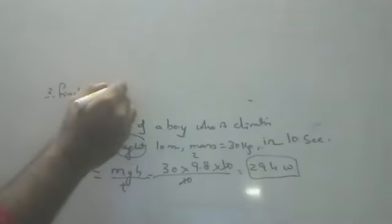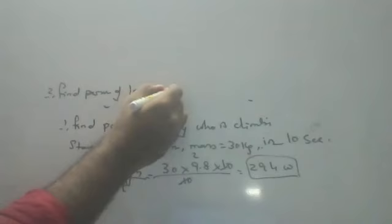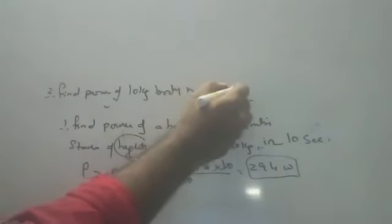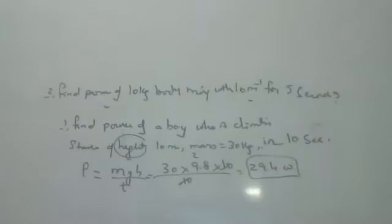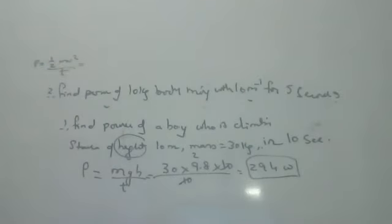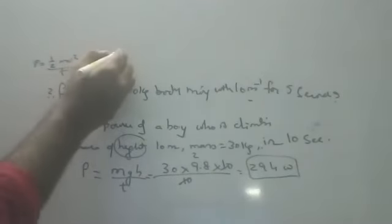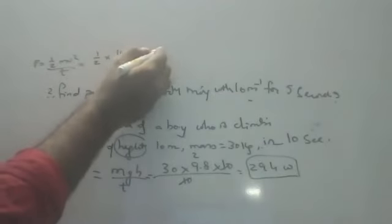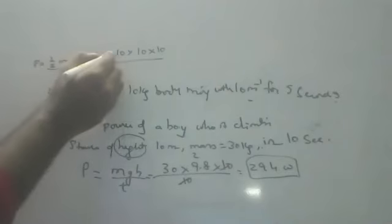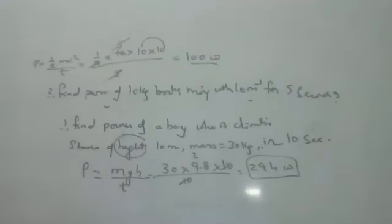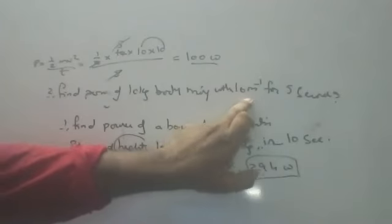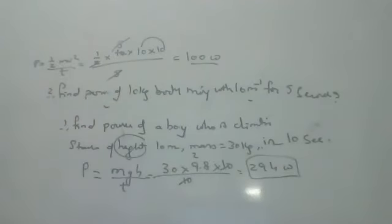Second sum: Find the power of a 10 kg body moving with 10 meters per second for 5 seconds. We use power equals half mv² by t. Half into 10 into 10² divided by 5. The 2 and 5 give 10, the 10s cancel partially, giving 100 watts of power dissipated.